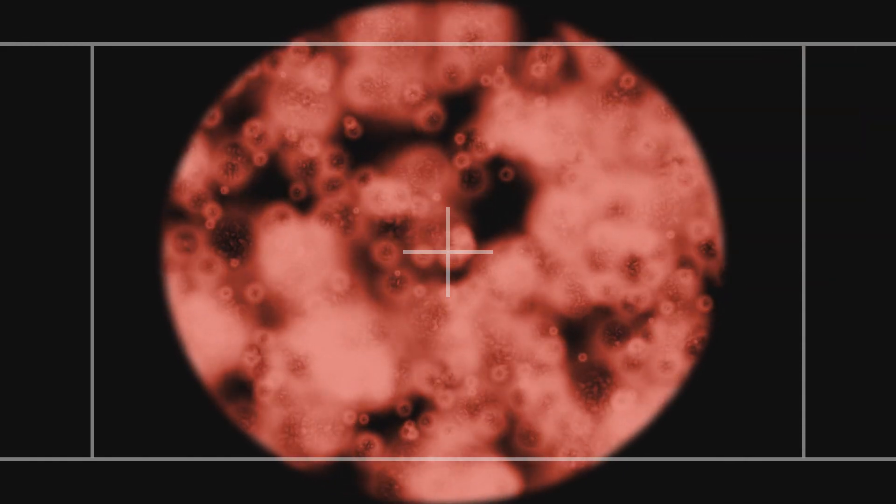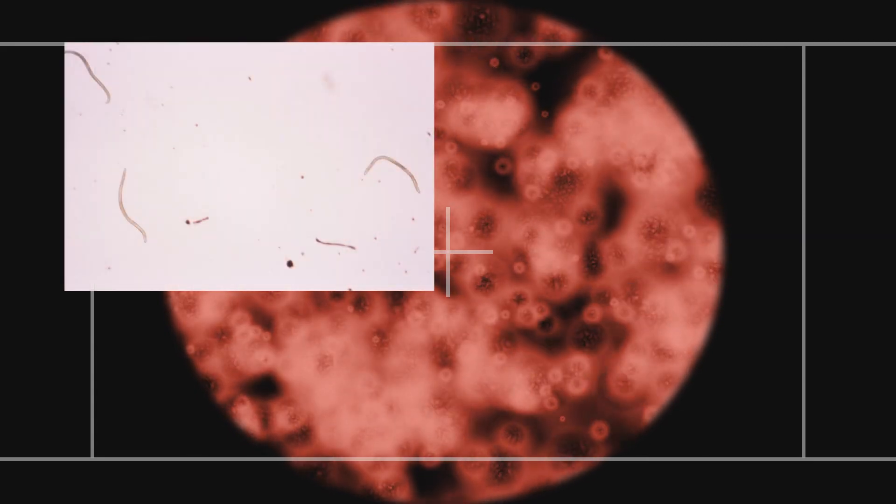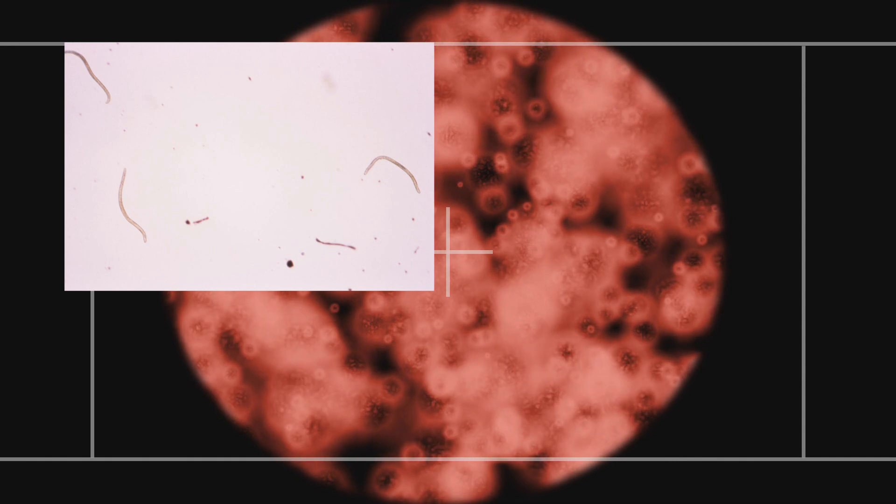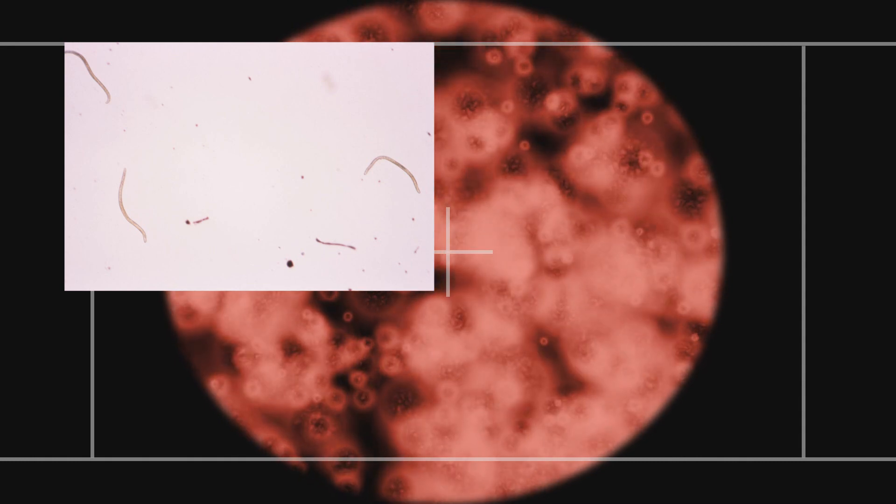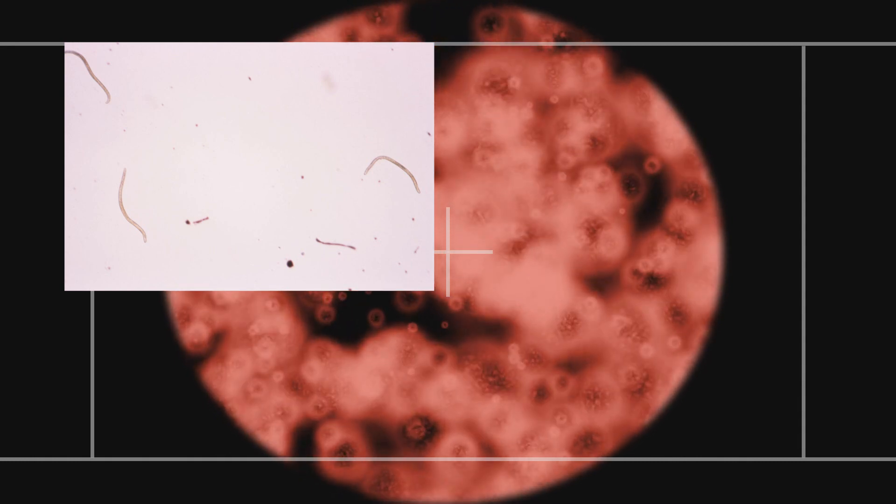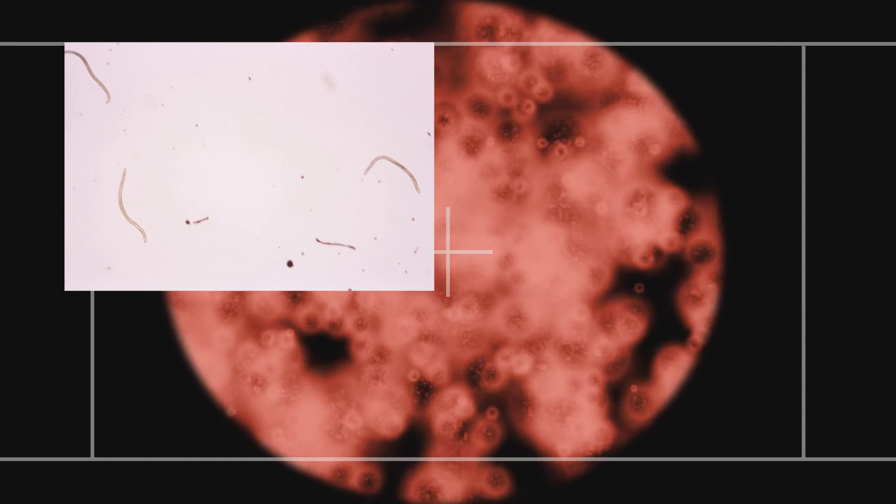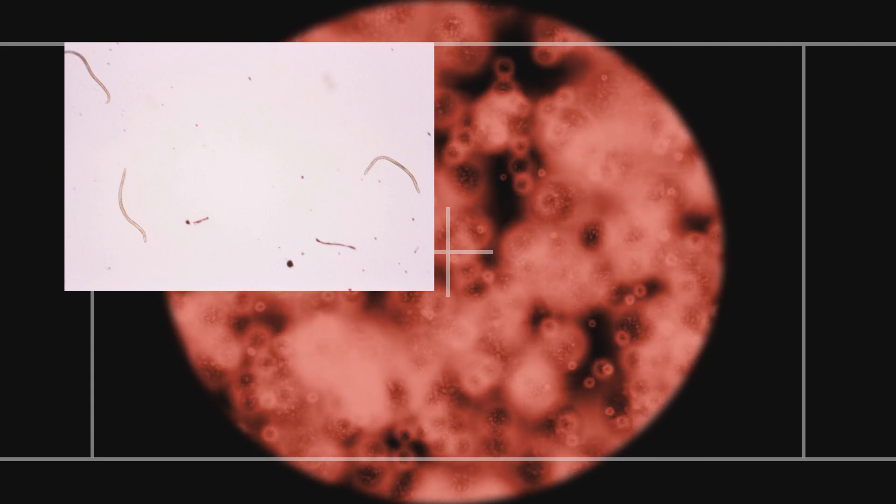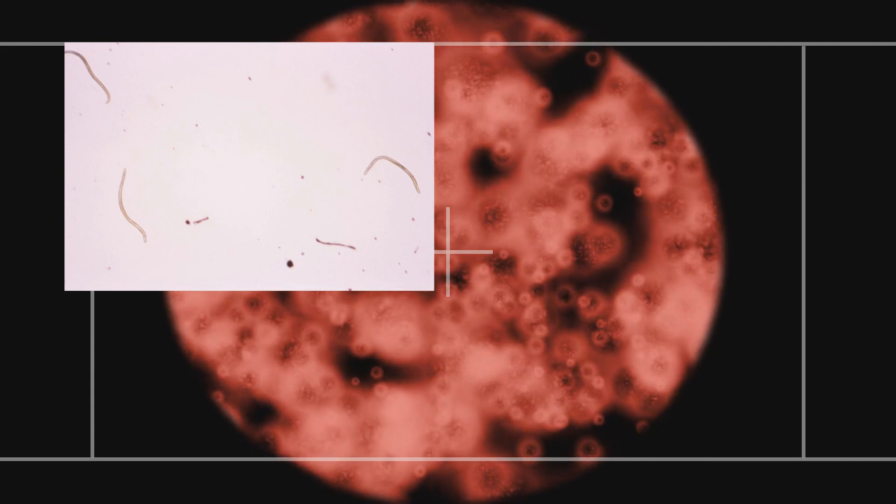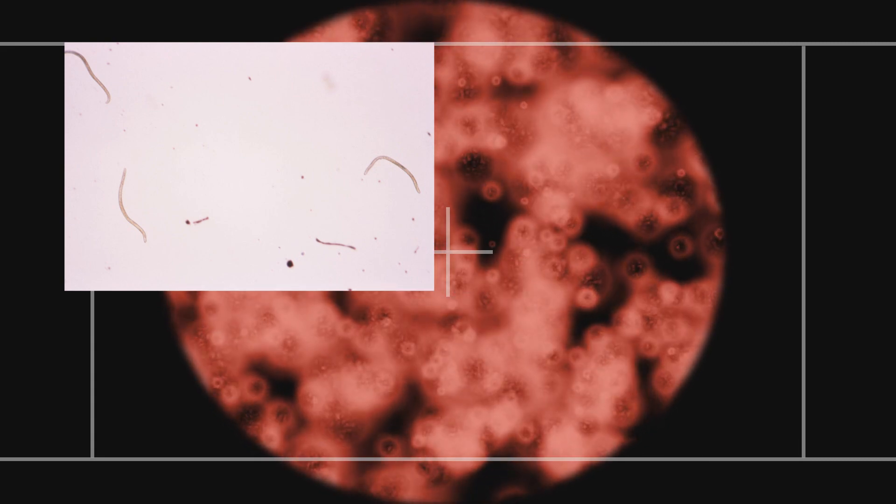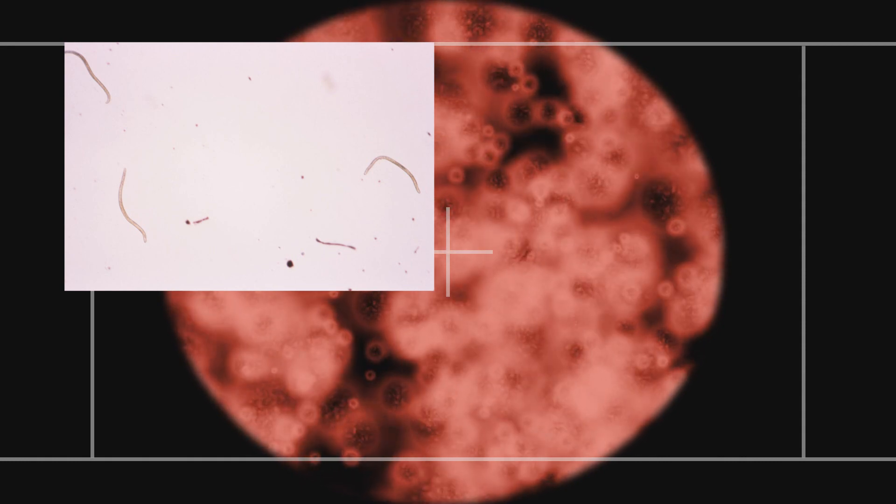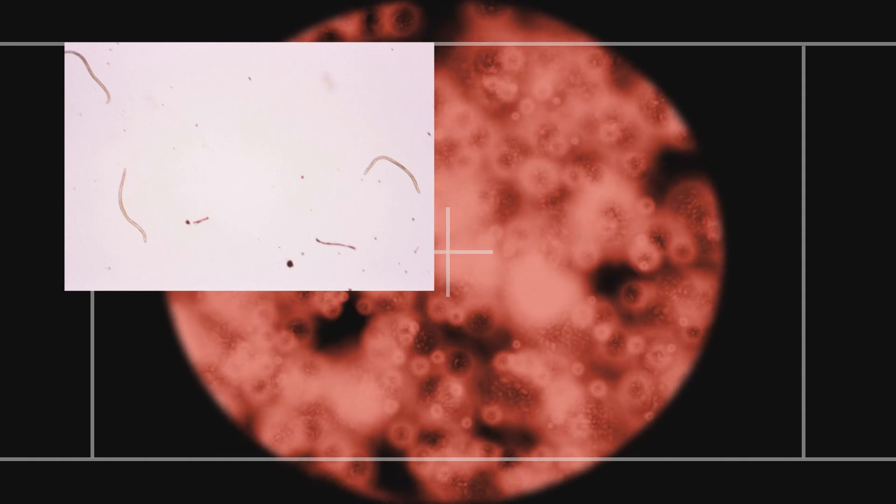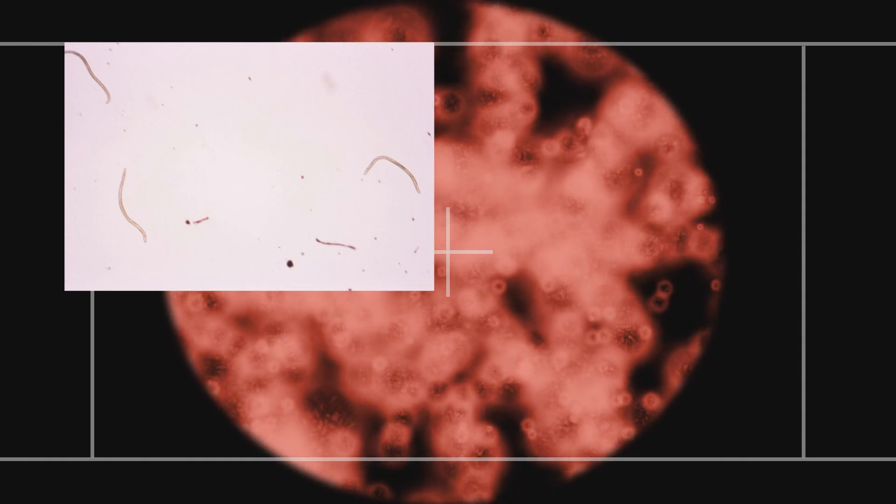Number 8, Onchocerca volvulus. This nematode, or better known as a species of roundworm, is transferred through a black fly bite. These little roundworms need a human body to grow and mature. But once they do, they cause a disease called river blindness. It causes the cornea to thicken and eventually causes permanent blindness. These parasites are the second largest cause for blindness in the whole world.